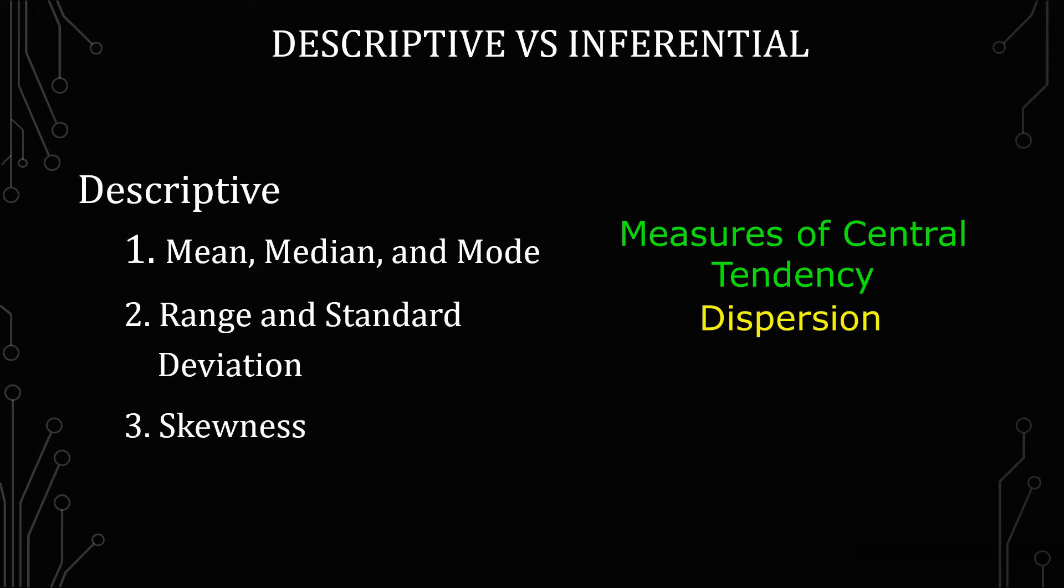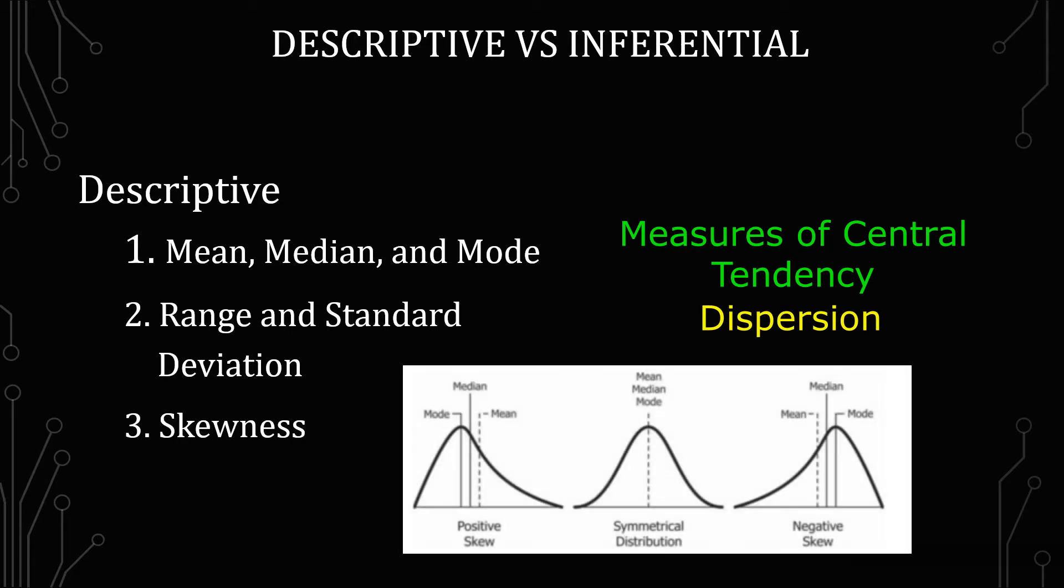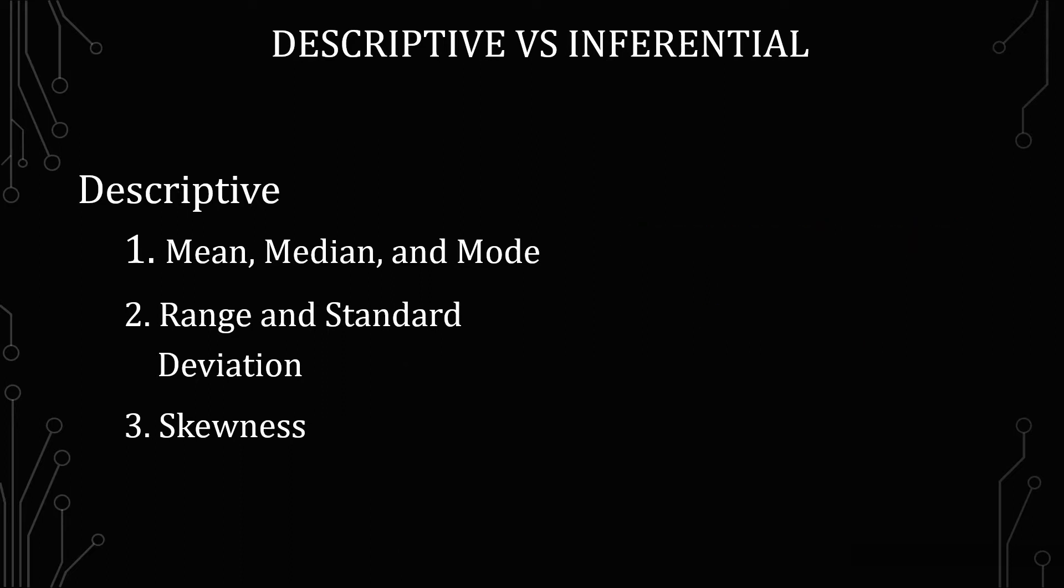And the third one is skewness, which answers the question of is it asymmetric or symmetric? Is it positively or negatively skewed? What is the pattern of data as it lies, is what this is trying to get at. And so that's typically what the descriptive statistics go over.